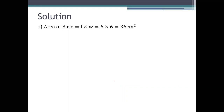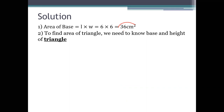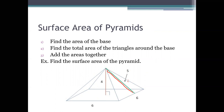For our solution, we find the area of the base first: six times six gives us 36 centimeters squared. Keep in mind it's squared because we're looking at surface area. Now we find the area of the triangle, which has a height of five and a base of six. Keep in mind that the height for this triangle is not four — the height of the actual pyramid is four centimeters, but the height of the triangle itself is five centimeters in this case.